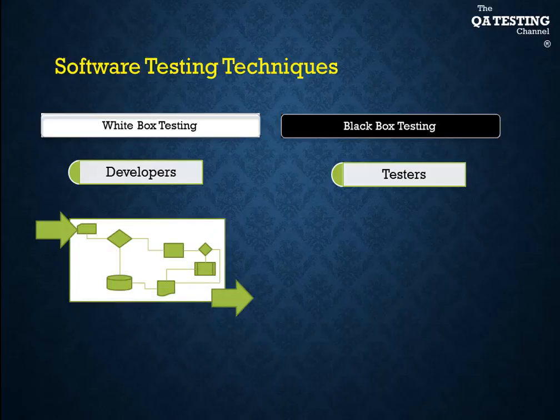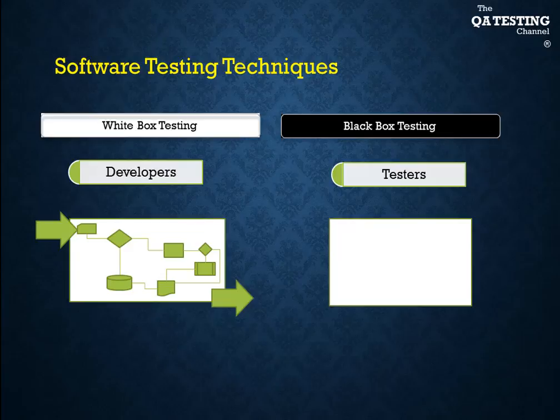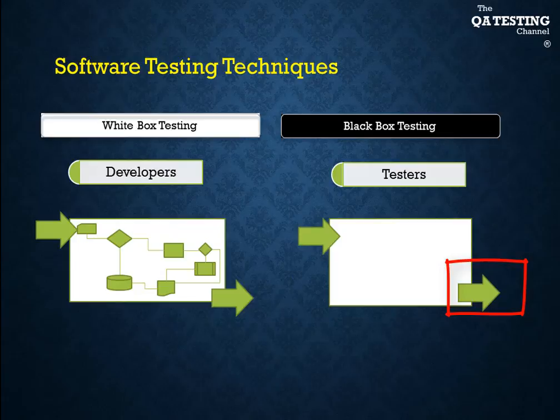Following the same example, using the black box testing techniques, we don't care about which flow our test takes through the code. Here we take care only about the expected result. There are different black box techniques. There is also the grey box testing technique.